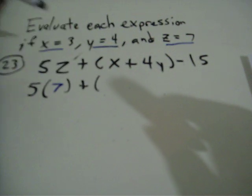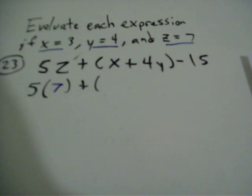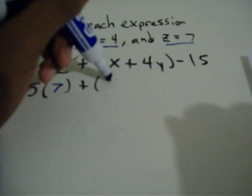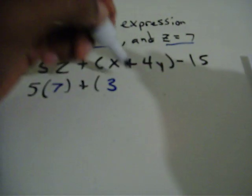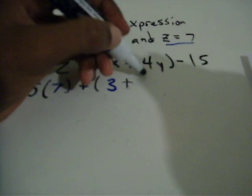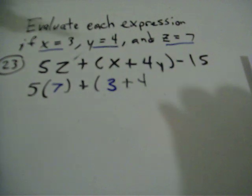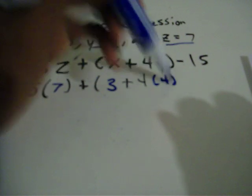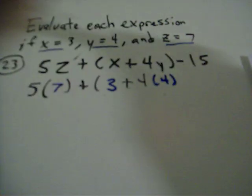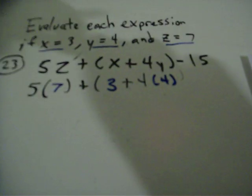Plus parentheses — in this case, x is 3 — plus 4 times y. So plus 4, and y is 4, so 4 times 4. Now minus 15.